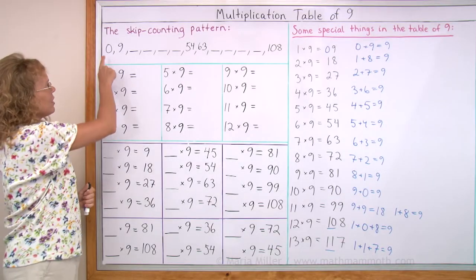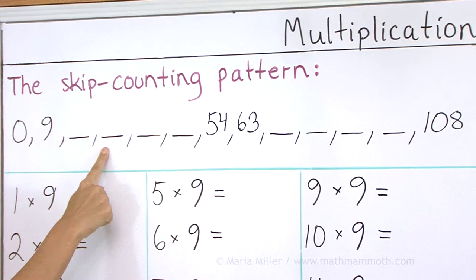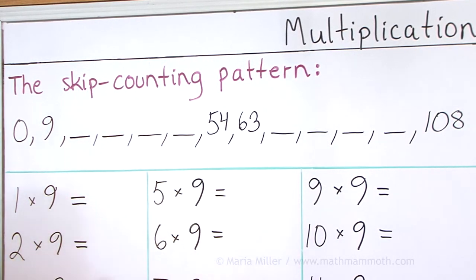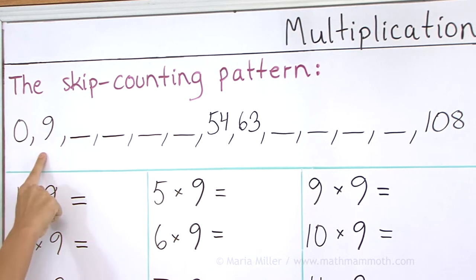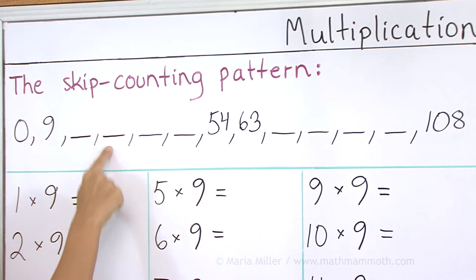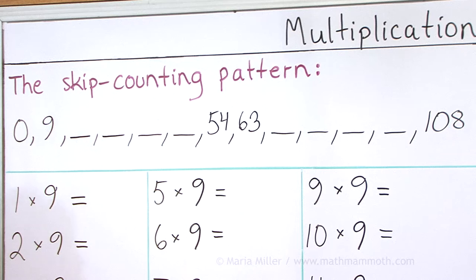And now let's go practice the skip counting pattern and the table. We have 0, 9, 18, 27, 36, 45, and 54. Again, 0, 9, 18, 27, or 2, 7, 36, or 3, 6, and then 45, 54. Your turn. 0, 9.